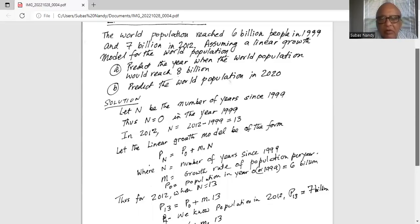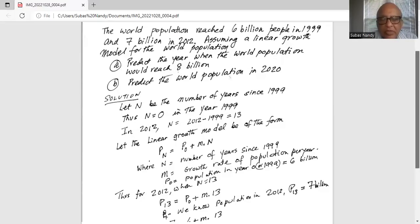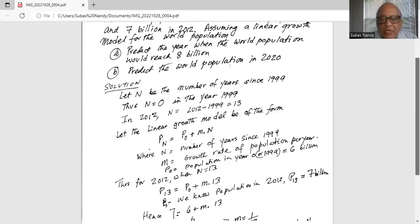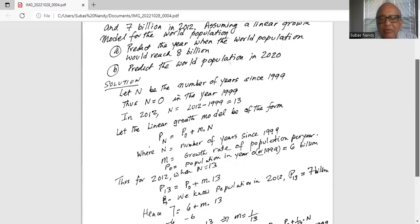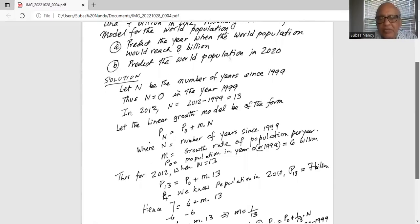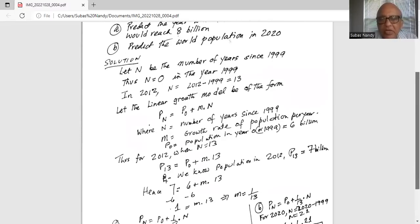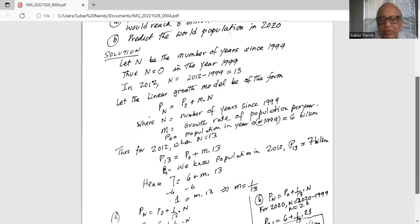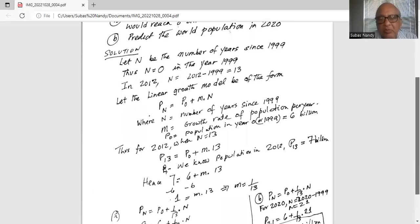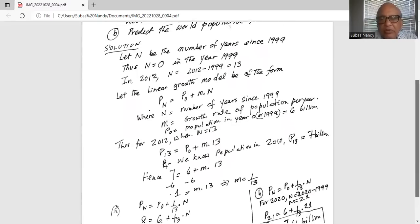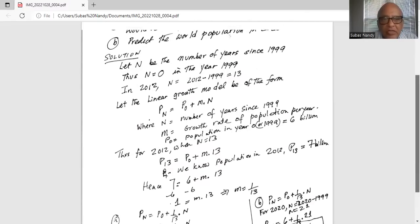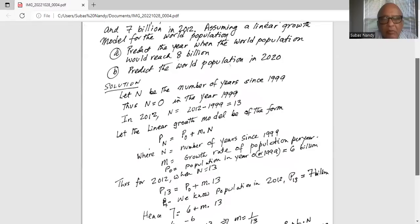Thus, for 2012, when n equals 13, P13 equals P0 plus m times 13. Hence, 7 equals P0, which is 6, plus m times 13. Subtract 6 on both sides. We get 1 equals m times 13. Divide by 13 on both sides to get m. The growth rate is 1 over 13.